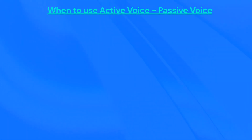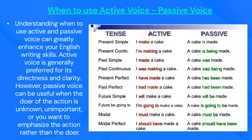When to use active voice and passive voice. Understanding when to use active and passive voice can greatly enhance your English writing skills. Active voice is generally preferred for its directness and clarity. However, passive voice can be useful when the doer of the action is unknown, unimportant, or you want to emphasize the action rather than the doer. Examples are in the image.